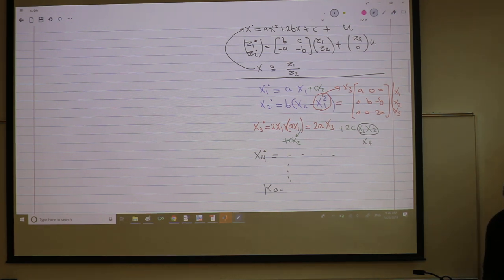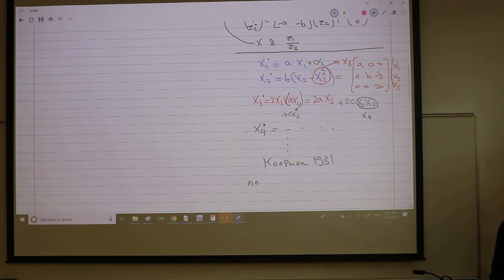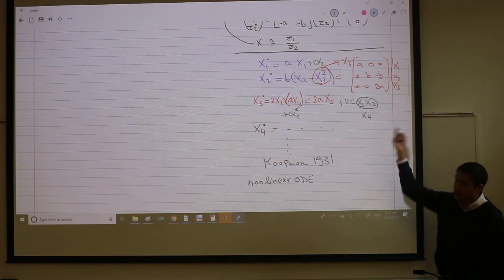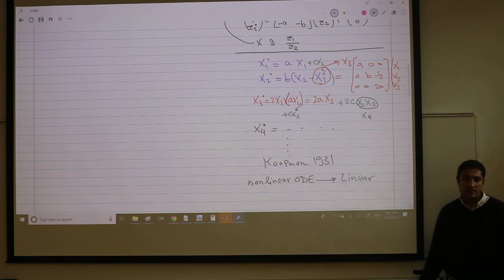So there is the Koopman operator theory, 1931, that in a nutshell, without going into too much detail - it's actually not stated this way in literature, but it is exactly this - if you have a non-linear ODE, like the first two states or something, whatever, we're sure that you can write it as linear, right? But you can increase the dimension, and the dimension may go to infinity.